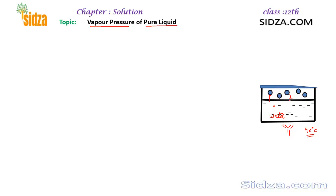So at the surface of a liquid there are two processes going on. One is the liquid changing into the vapor state, which is called evaporation. The second is the vapor state changing into the liquid state, which is called condensation. In a closed vessel, both evaporation and condensation are occurring simultaneously.